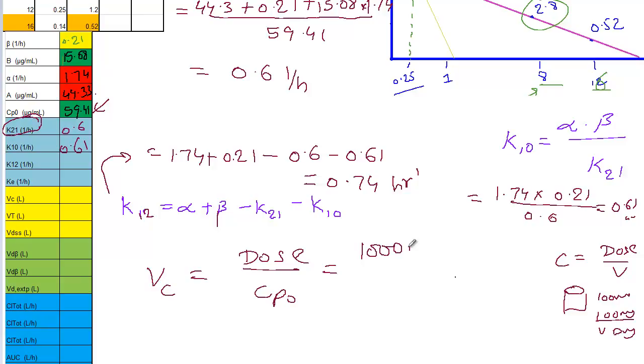Dose is what? 1000 milligrams divided by CPE naught. We calculated that is 59.41. If you solve for this one, you'll get a value of 16.83. Vc is 16.83. K12 is how much? 0.74.